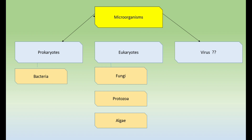Prokaryotes are those that do not have a true nucleus, while eukaryotes have a true nucleus. What 'true nucleus' means is that in prokaryotes the nucleus is not membrane-bound, whereas in eukaryotes the nuclear or chromatin material is bounded by a nuclear membrane. The only category under prokaryotes is bacteria; eukaryotes include fungi, protozoans, and algae. Viruses are the only microorganisms that don't fit into either category because they are acellular structures.